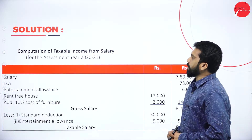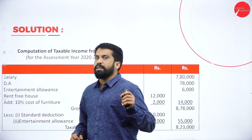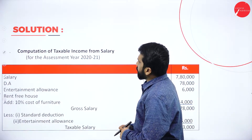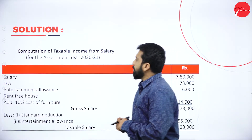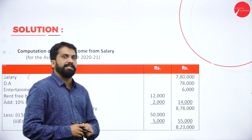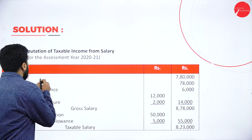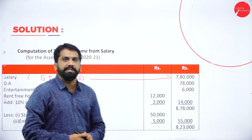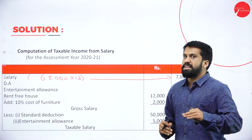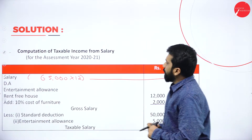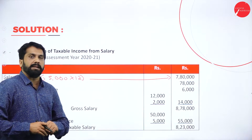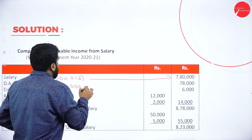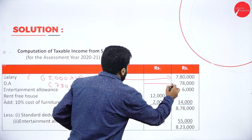For the solution, you have to mention computation of taxable income from salary for assessment year 2020-2021. First, salary: he was getting 65,000 per month — 65,000 multiplied by 12 equals 7,80,000. Once done with salary, go for DA (Dearness Allowance). As per the question, 10% on salary: 10% of 7,80,000 equals 78,000.